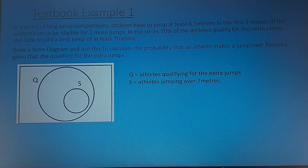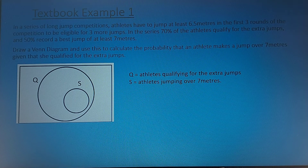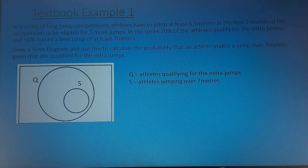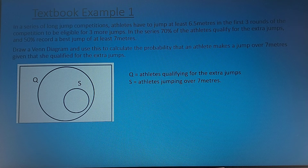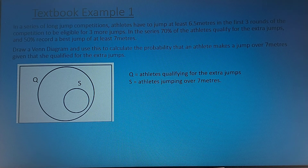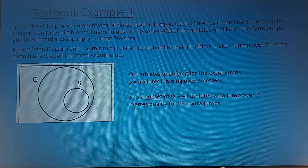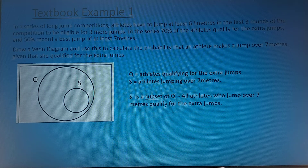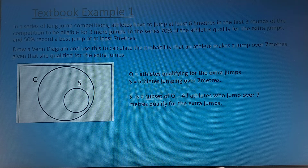In the book, Q is defined as the set of athletes qualifying for the extra jumps, and set S is the athletes jumping over 7 meters. We need to see that S is contained in Q — we say that S is a subset of Q, since all athletes who jump over 7 meters qualify for the extra jumps.